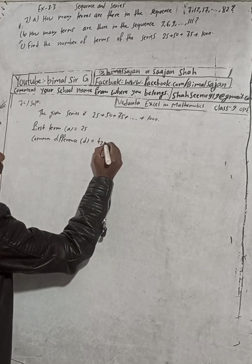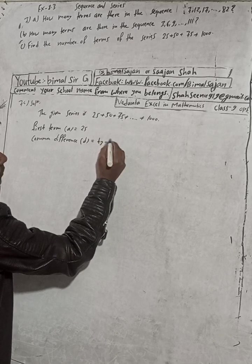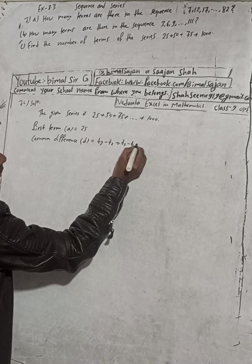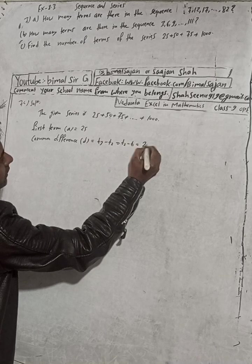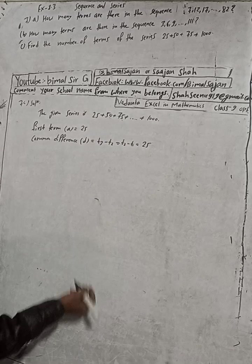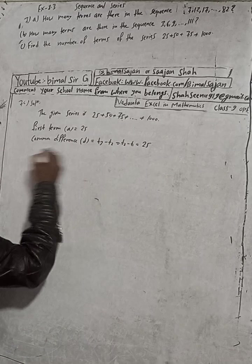That means here if we find this consecutive term difference, t3 minus t2 is equal to t2 minus t1, what do we find here? 25. How 25? 75 minus 50 is 25, 50 minus 25 is 25.